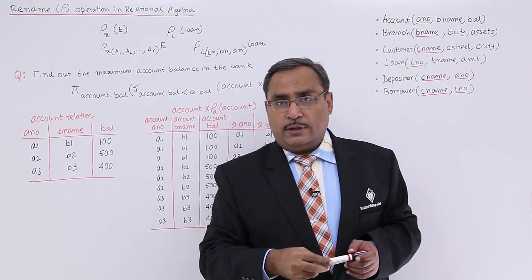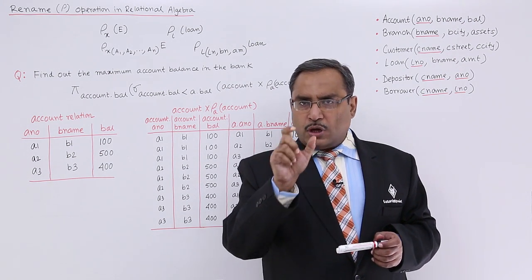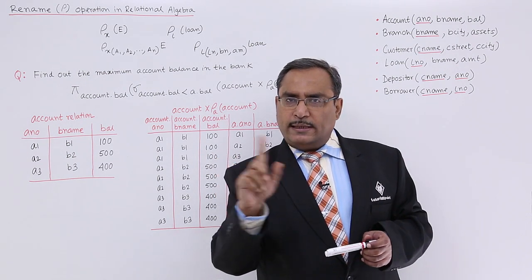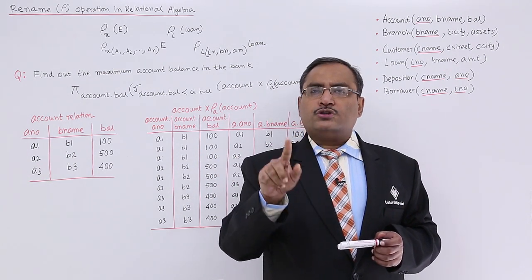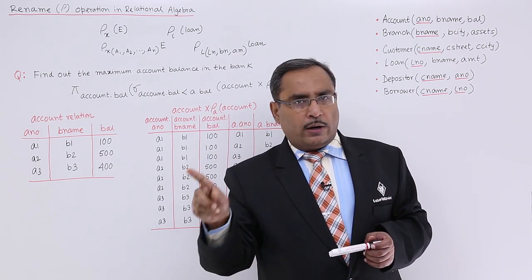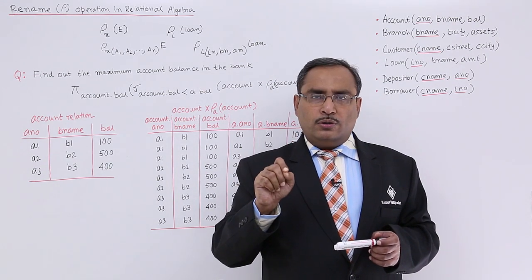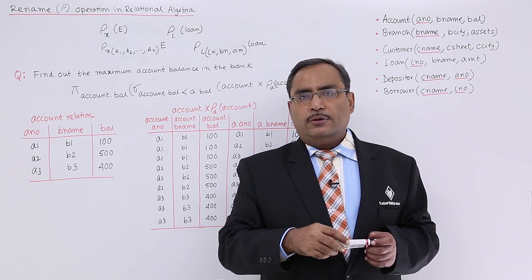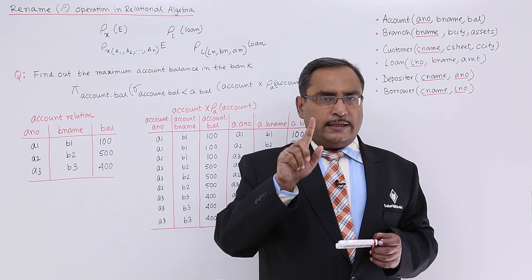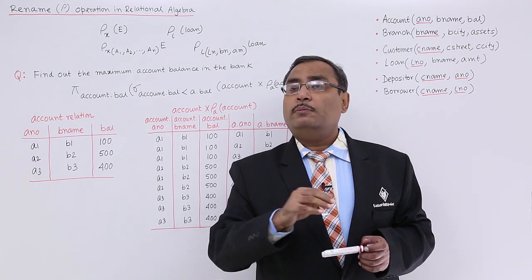There is another reason the rename operator can be used. Suppose I want to do a Cartesian product between the same tables — say loan cross loan. In that case, at least one loan has to be renamed; otherwise, writing loan.LNO will create ambiguity. Whenever you do a Cartesian product between the same relations, one of them must be renamed to resolve the ambiguity.